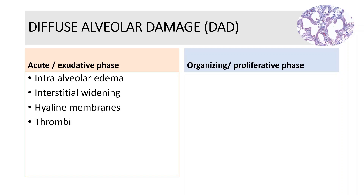The acute phase is usually easily recognizable. The findings are generally diffuse or patchy. By day 2, intra-alveolar edema and interstitial widening are apparent. Hyaline membranes may be seen at this point, reaching a peak by 4 to 5 days after the initial insult. Generally, inflammation is relatively sparse. Thrombi may be present and may be quite extensive. The formation of thrombi in diffuse alveolar damage is due to local alterations in the coagulation pathway and should not be considered evidence of an underlying thromboembolic disorder in this patient.